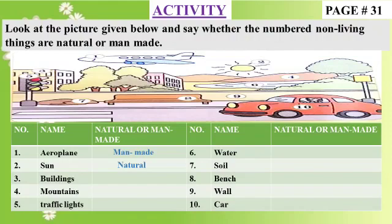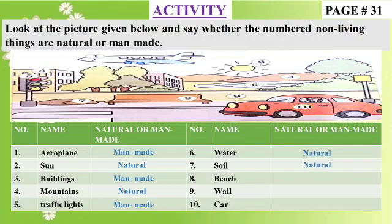Number 3 is buildings — buildings are a man-made non-living thing. Mountains — natural non-living thing. Traffic lights — man-made non-living thing. Water — natural non-living thing. Soil — natural non-living thing.